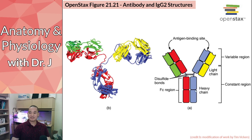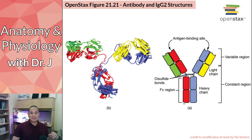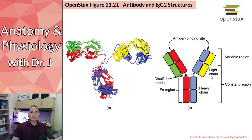Antibodies are proteins made of polypeptides, and the two antigen-binding sites are identical even though they may be colored differently in diagrams. The heavy chains are identical to each other within the same antibody, as are the light chains. There is also an Fc region, which we may cover in more advanced classes, and a variable region that differs between different antibodies.